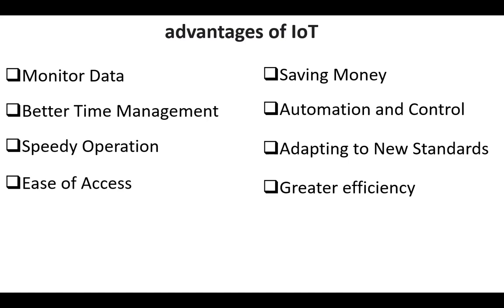Next, saving money. IoT mainly aims to be helpful to people in their daily life by making their devices communicate with each other in an efficient manner, thereby saving energy and cost.